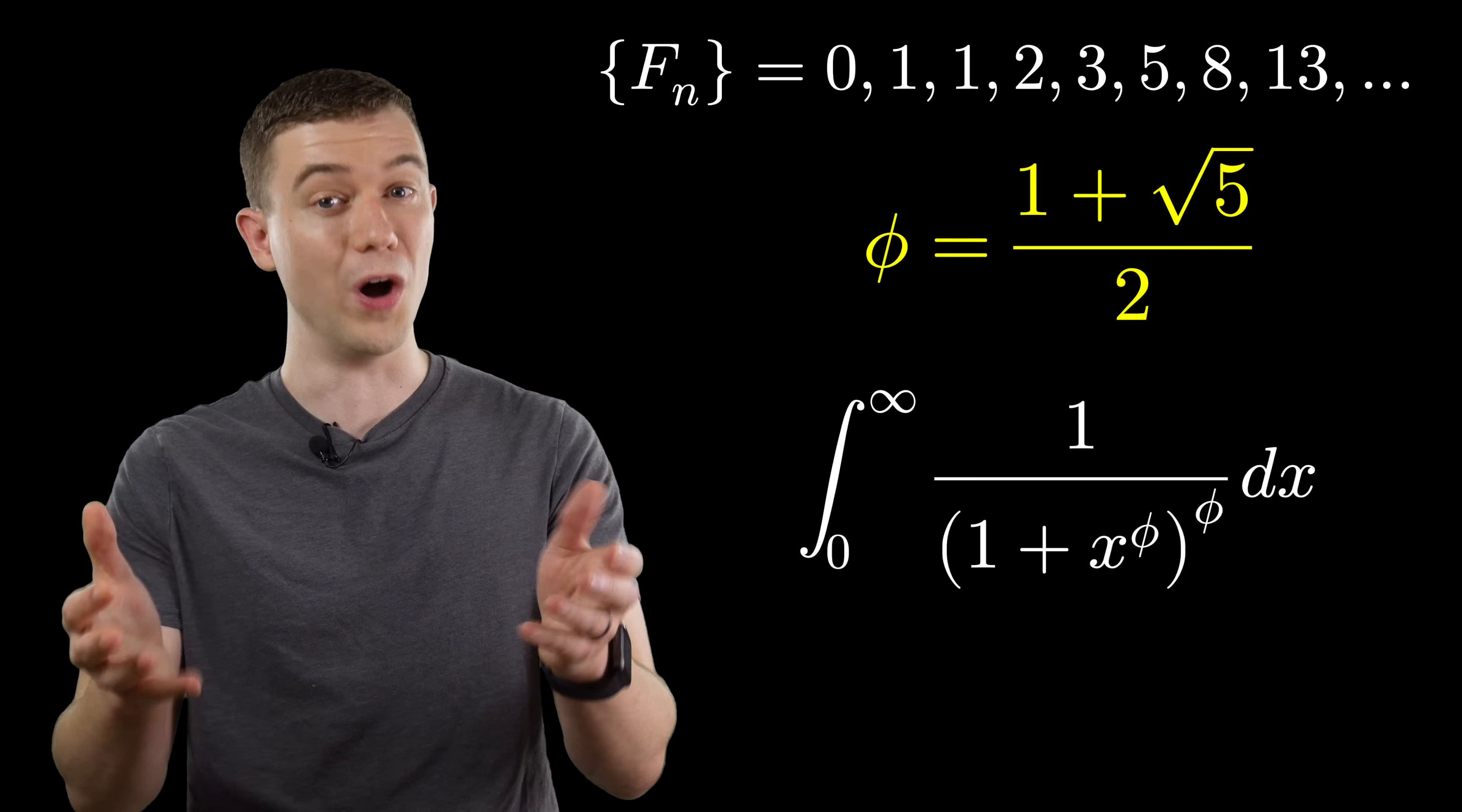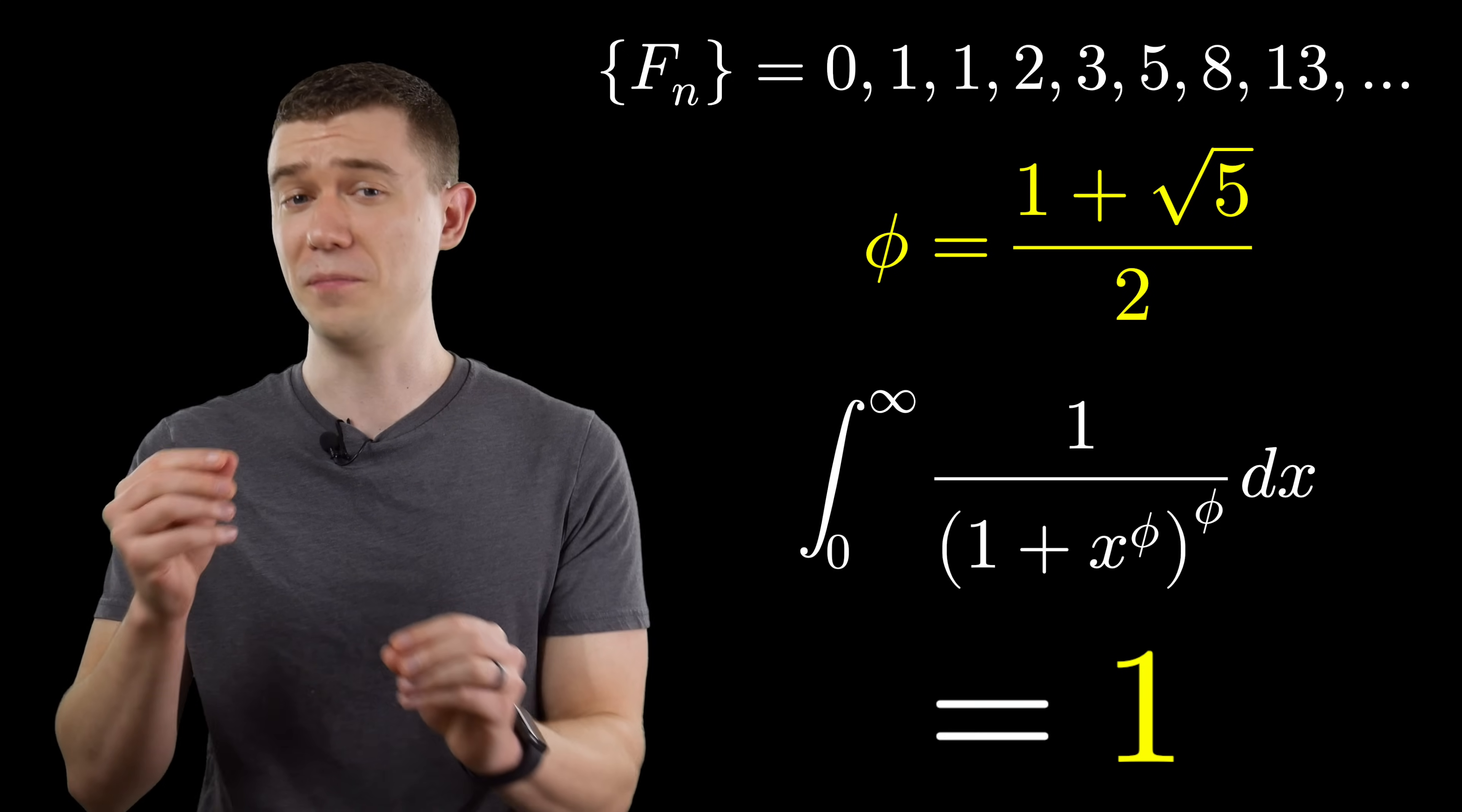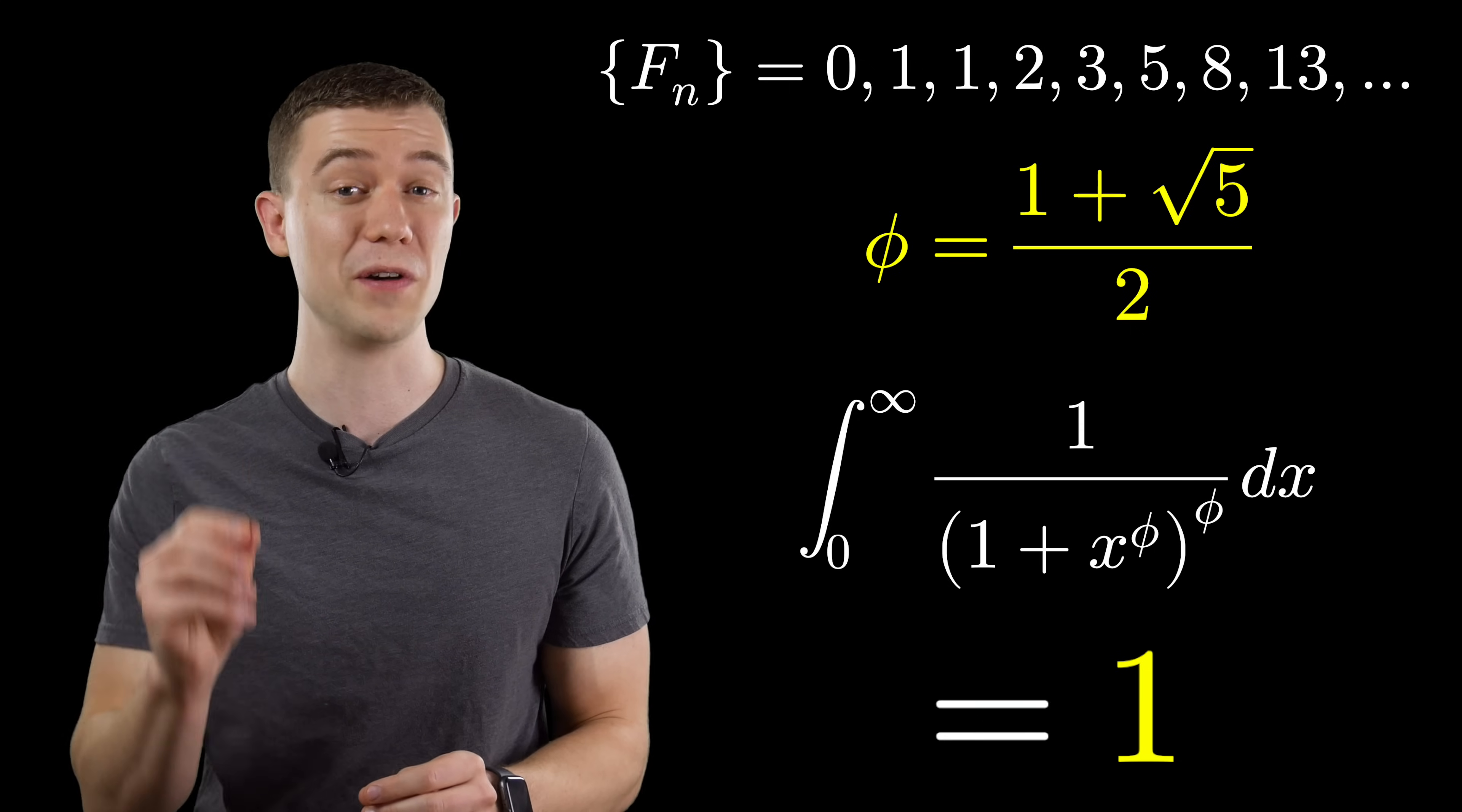Now considering the golden ratio is this wild number, it's pretty amazing that if you compute this definite integral, you're actually getting 1. Now the process for doing this is maybe a little bit tedious. Let me know in the comments if you want to see an actual video showing how to compute this integral.